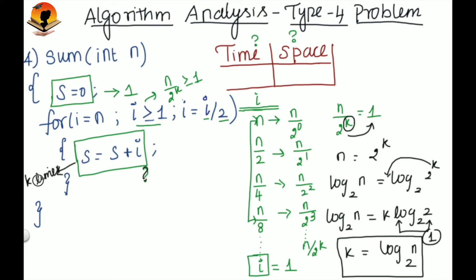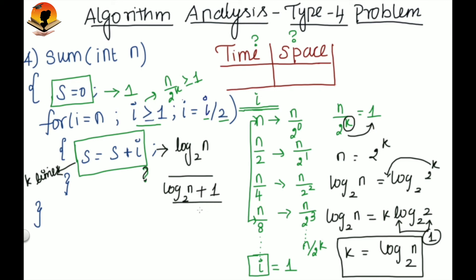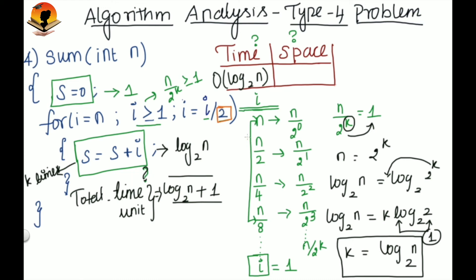So this statement will be executed k times, and therefore the time unit for this statement is log n base 2. The total time unit is log n base 2 plus 1 — the 1 is for the declaration statement, and log n base 2 is for the loop body statement. In asymptotic analysis we ignore the constant term, so the time complexity for this problem is O(log n base 2).